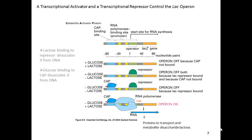Resuming our discussion about complex gene regulation. On this slide we're going to see how the cell controls sugar metabolism, and in particular how it regulates gene expression based on the presence of two sugars: glucose, which is its preferred sugar source, or lactose. It can use lactose to grow but it only likes to do so when no glucose is present because it's a less efficient sugar.